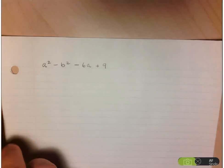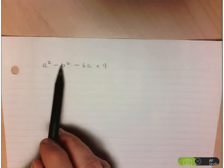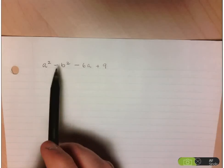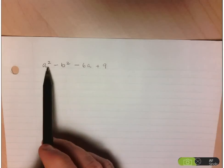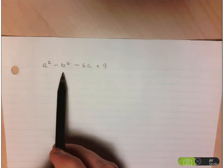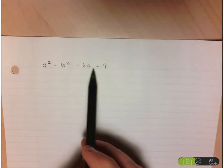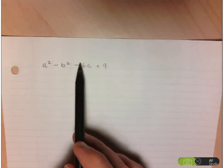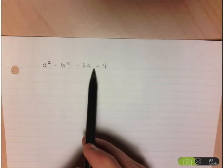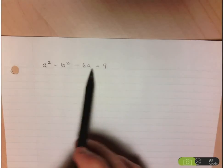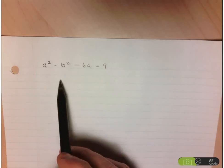So I need to try to find some patterns and the first thing that comes to me right away is a squared minus b squared — a difference of squares. I know that this factors to a plus b times a minus b. The problem is that I'm not quite sure what I would do with this minus 6a plus 9; I don't think I could really make it relate to that factorization.